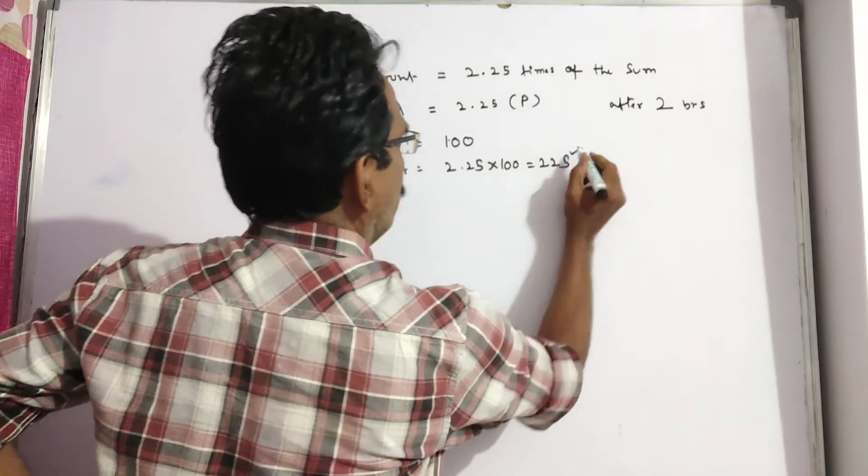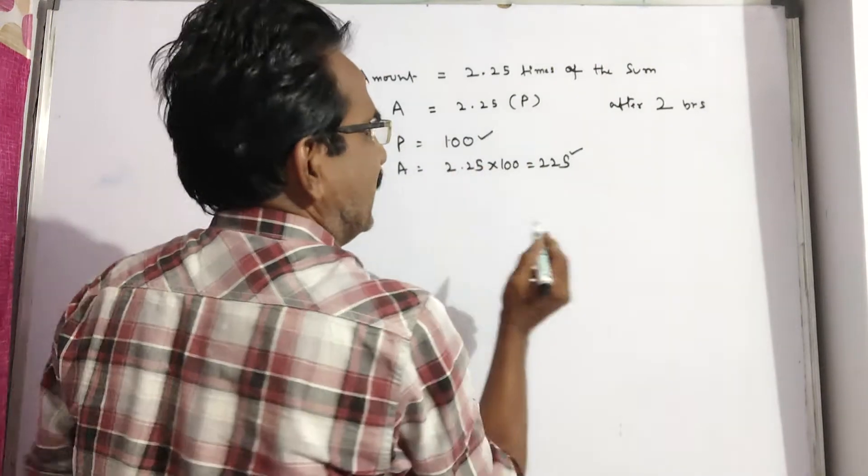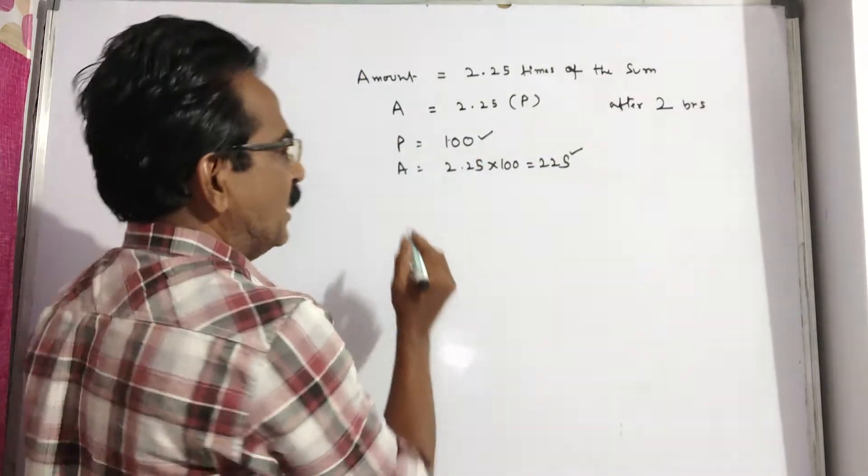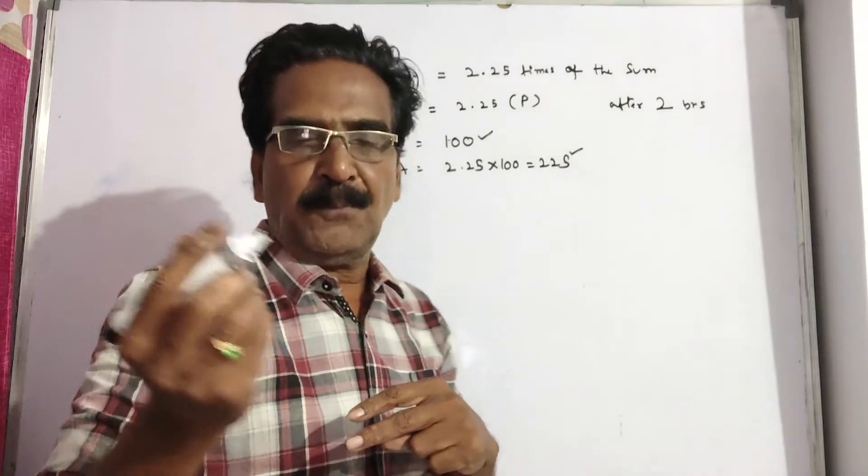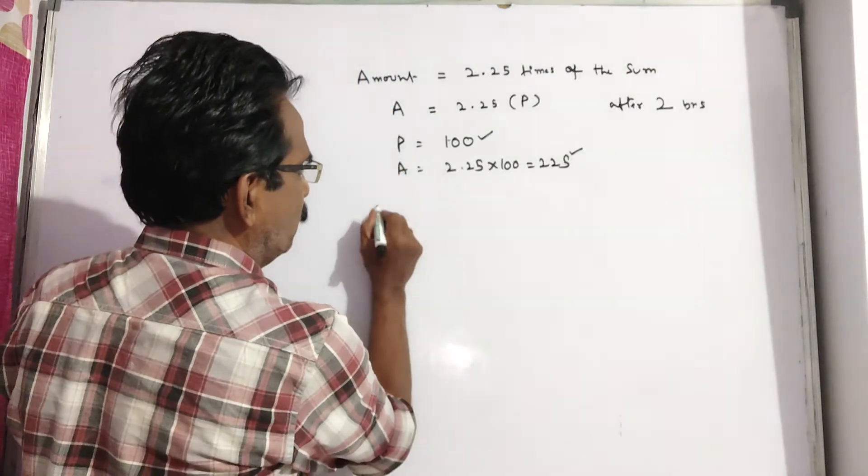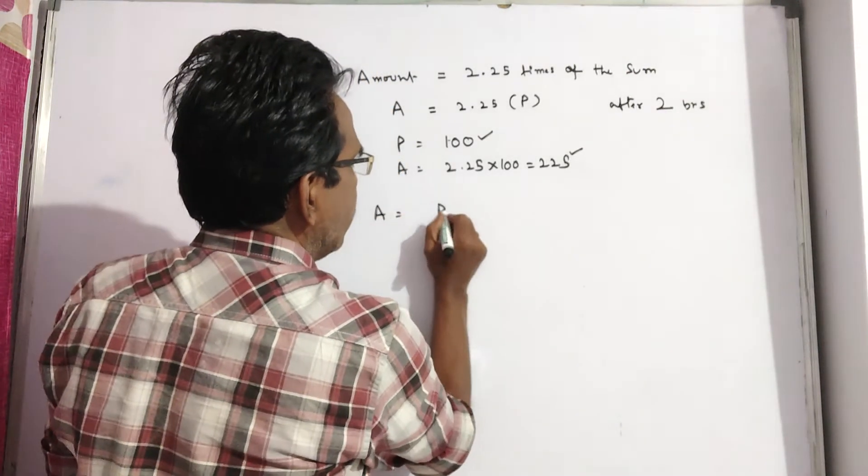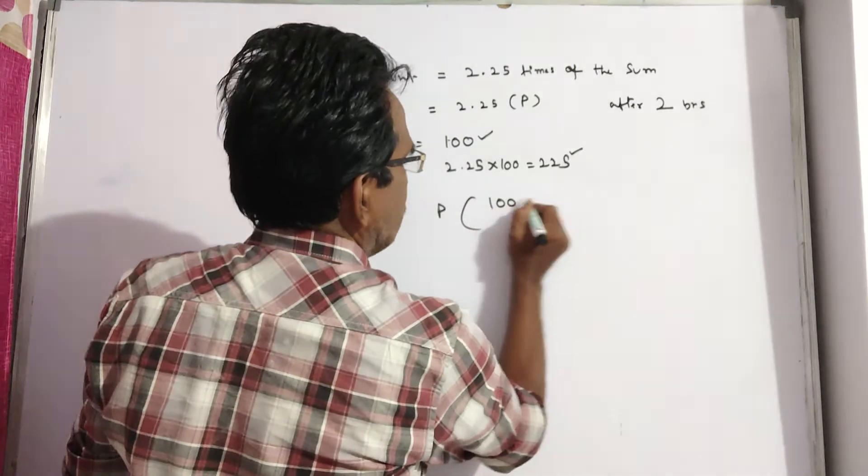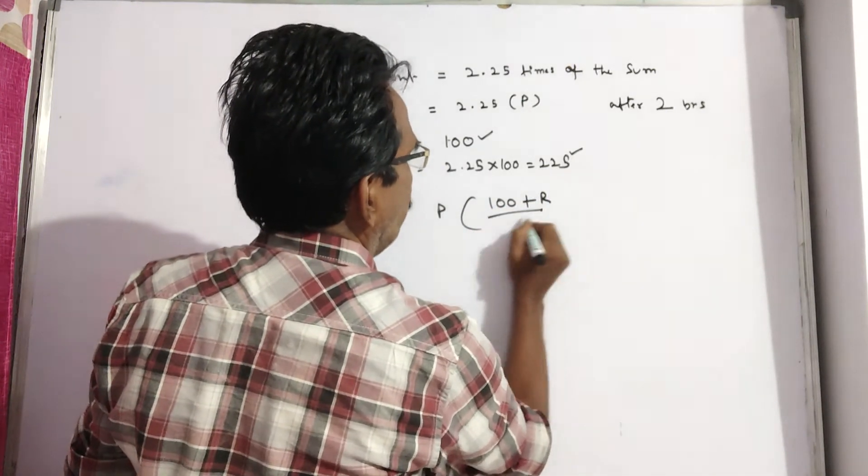Now A is 225, P is 100, n equals 2 years. Compound interest amount A is equal to P into (100 plus R by 100) whole power n.